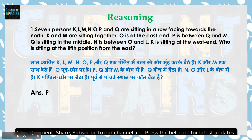So let's solve it. Total 7 persons are there, and all faces are towards north. K and M are sitting together — K and M are placed there.